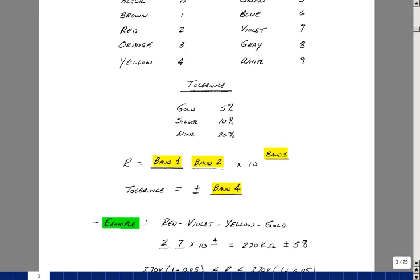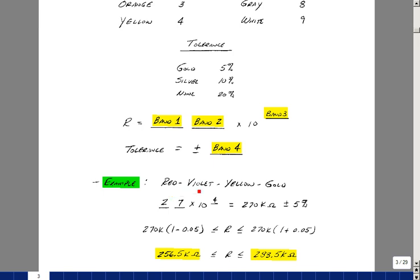Let's do an example. Suppose that we take a red, violet, yellow, gold resistor and try to figure out its value and then its range of values. Look up above, red is two, violet is seven, and yellow is four.